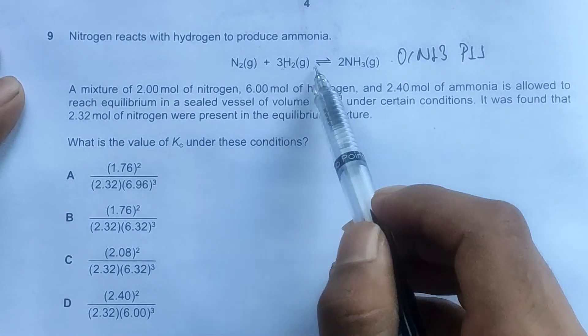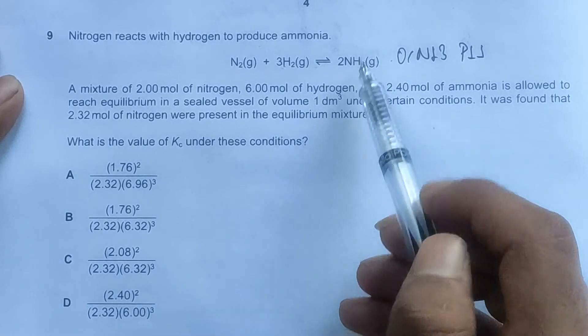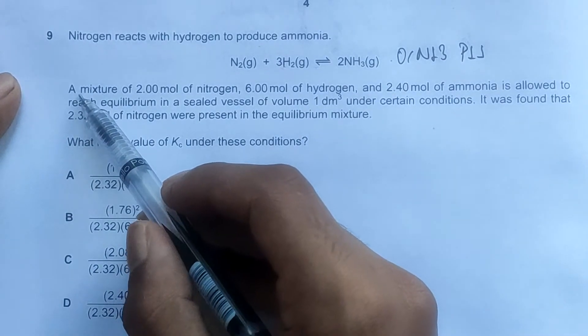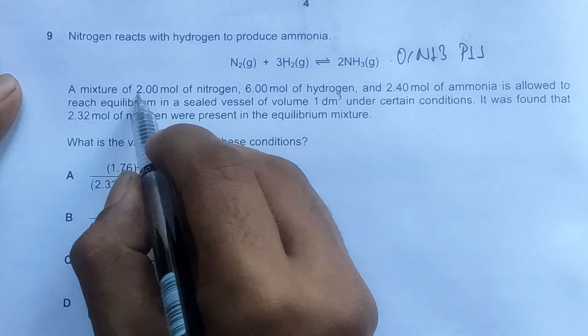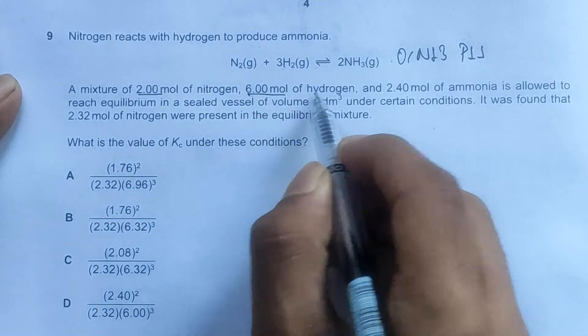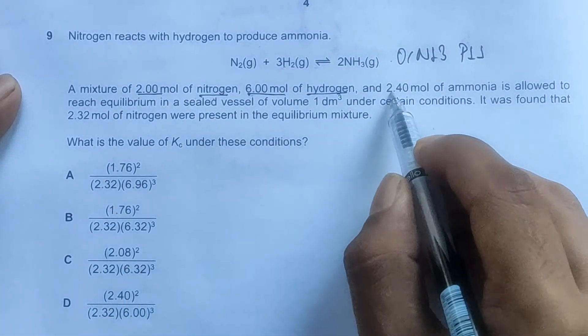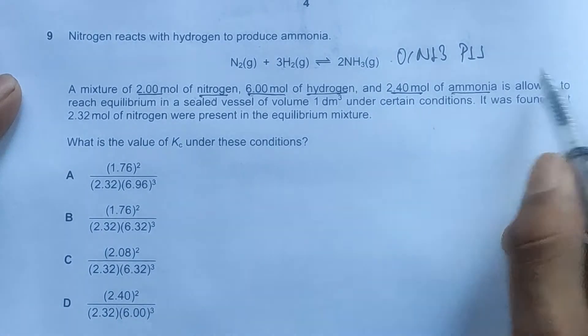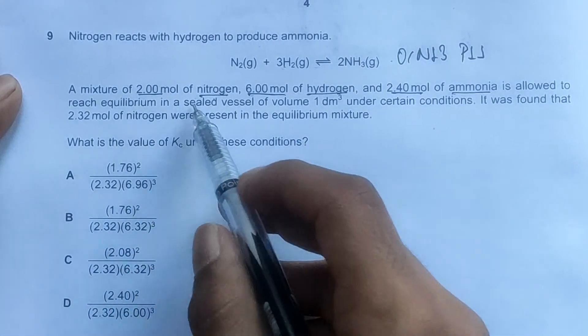Here we have nitrogen and hydrogen reacting in an equilibrium reaction to form ammonia. The further information provides a mixture of 2 moles of nitrogen,